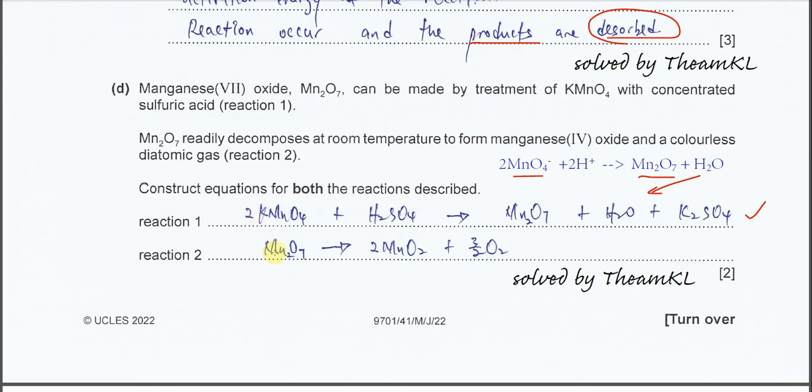Reaction 2 is easy because it already told you it forms two products. Manganese(IV) oxide is MnO₂, so you get this MnO₂ plus 3/2 O₂. So you get this balanced equation.